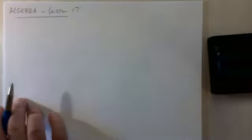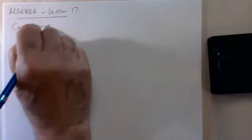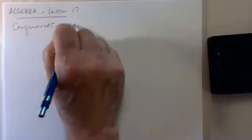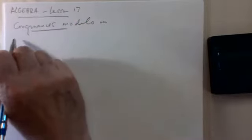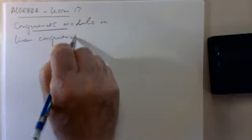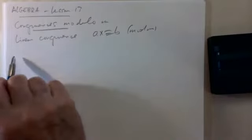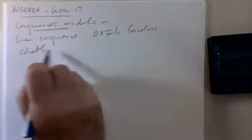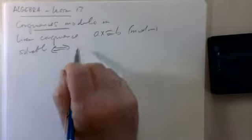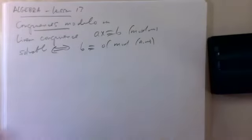Let's review a couple of the things we did on Monday. We looked at congruences modulo M. One of the important results has to do with when you can solve a linear congruence: AX ≡ B mod M. This has a solution if and only if B is divisible by the greatest common divisor of A and M.